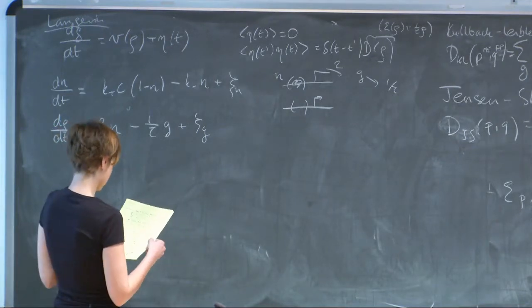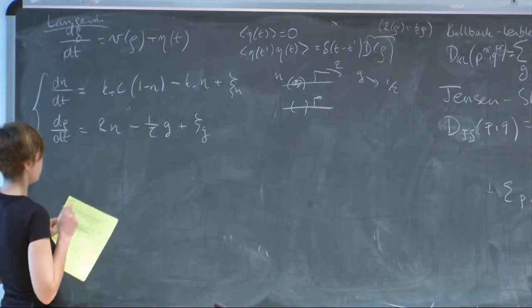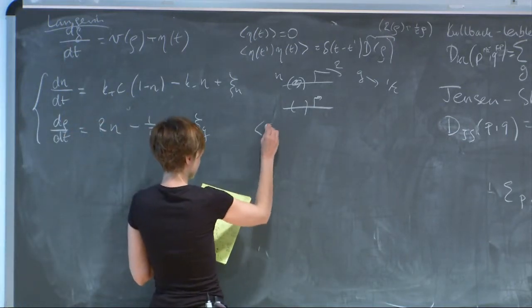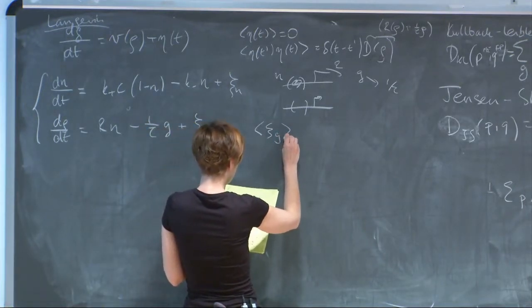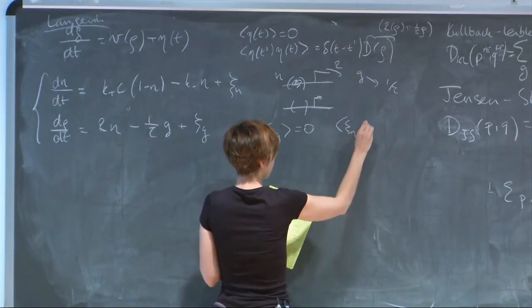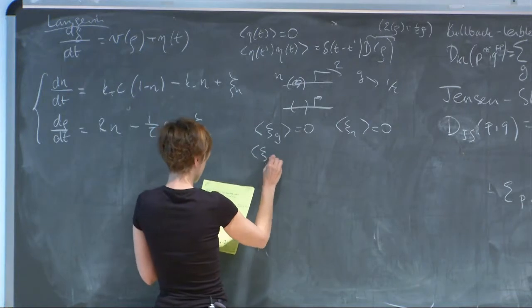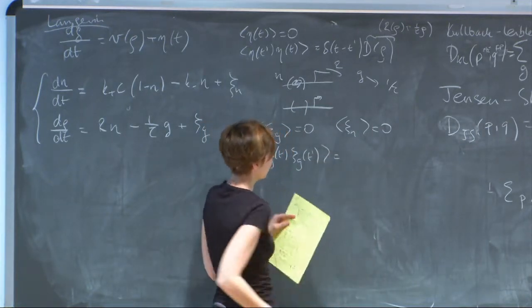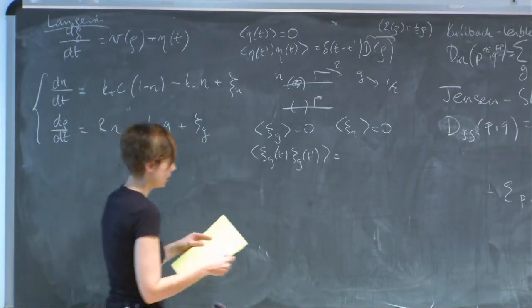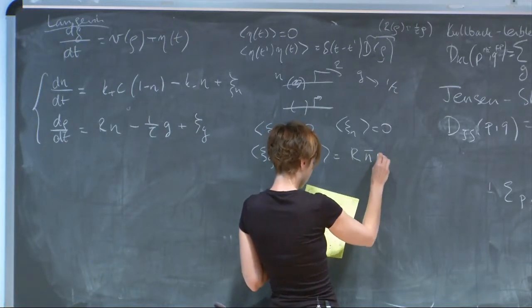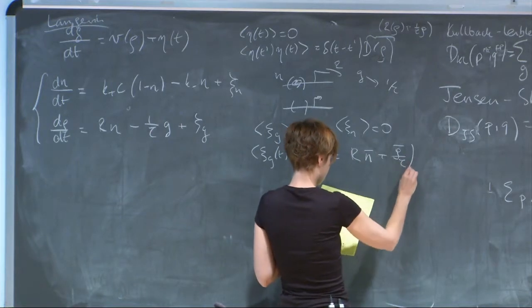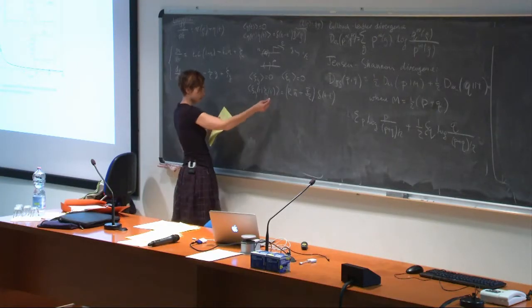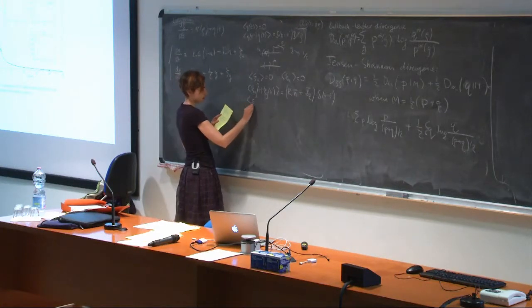The Langevin equations make no sense unless you specify the noise correlations. The means of the noise are zero in both cases. What sets the scale of fluctuations is the noise in the birth-death process. For the gene state, the correlation of the noise is set by the sum of the two rates — it's a two-state process.